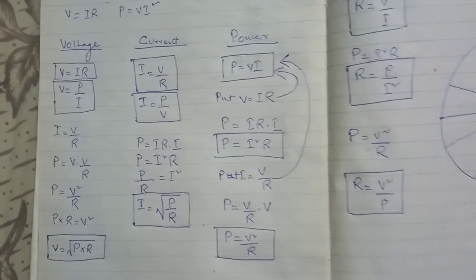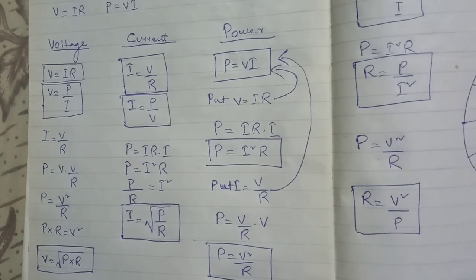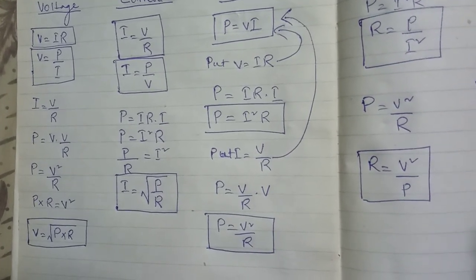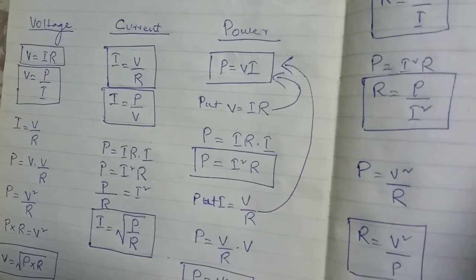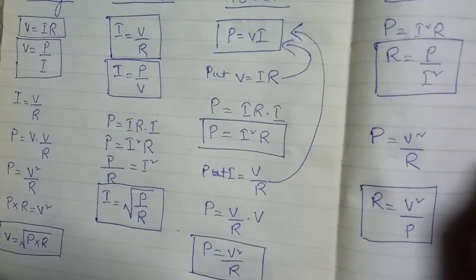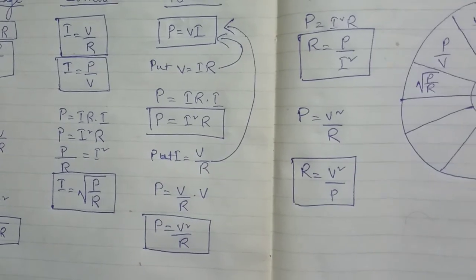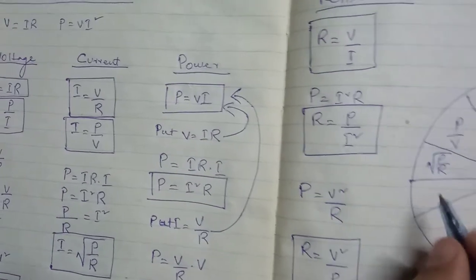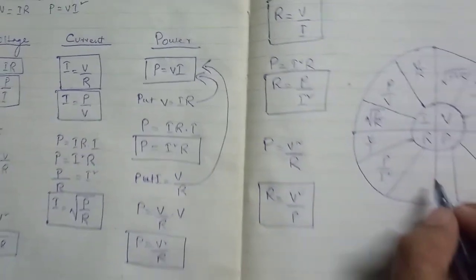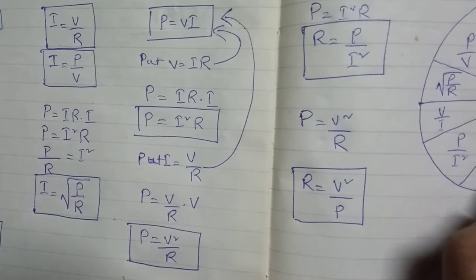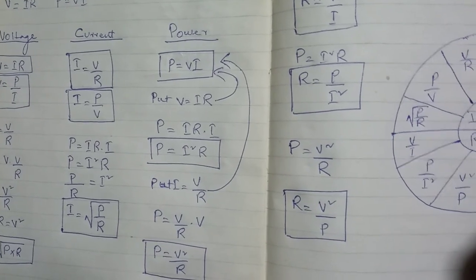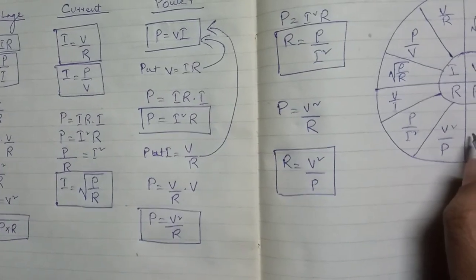In the chart, write V, I, and R. Three formulas for voltage are: V = IR, V = P/I, and V = √(PR). Three formulas for current are: I = V/R, I = P/V, and I = √(P/R). Three formulas for resistance are: R = V/I, R = P/I², and R = V²/P. Three formulas for power are: P = VI, P = I²R, and P = V²/R.